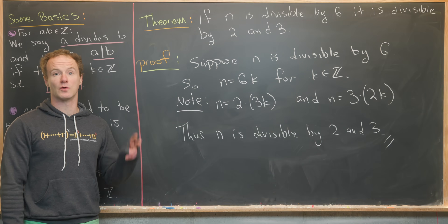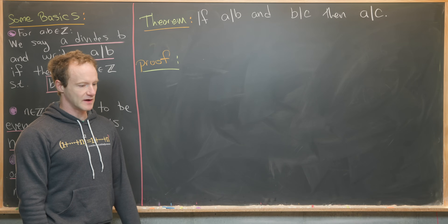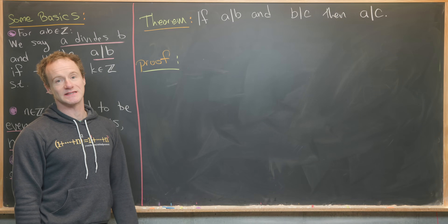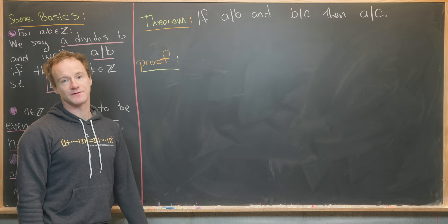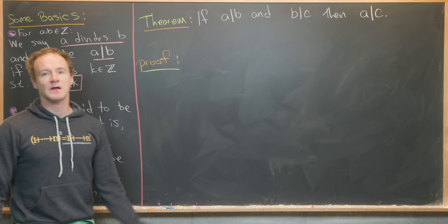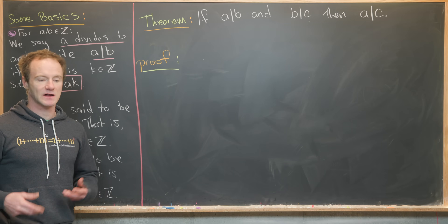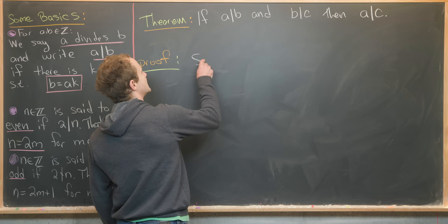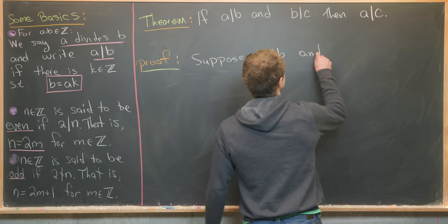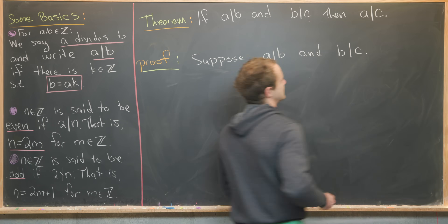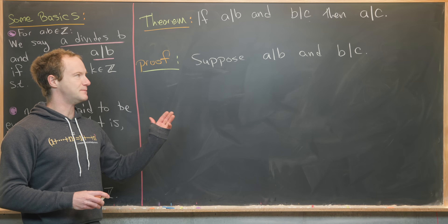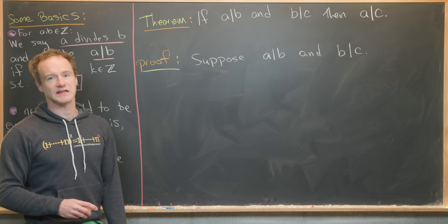Next, we're going to prove a property of divisibility: if a divides b and b divides c, then a divides c. Our P statement is compound — we've got two things to start with. Suppose that a divides b and b divides c. Using the definition of divisibility, we can write b equals an, and c equals bm, for integers m and n.